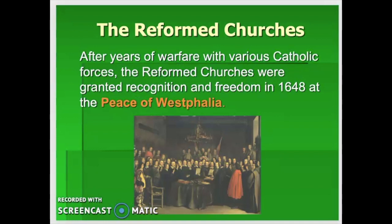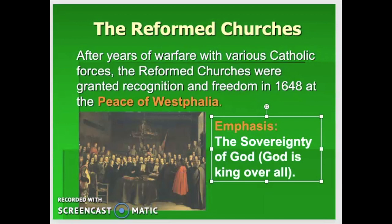The Reformed churches were also outlawed, but after years of war with Catholic forces, they were granted official recognition and legalization in 1648 at the Peace of Westphalia. Now there were three legal versions of Christianity in Europe: the Roman Catholic Church, Lutheranism, and the Reformed churches. The emphasis of the Reformed churches, if there was a single one, would be the sovereignty of God — meaning God is king over all, the ultimate ruler and authority.